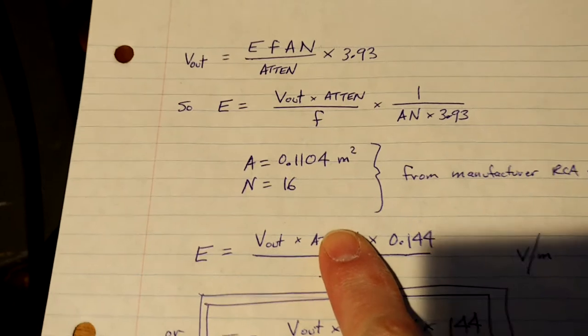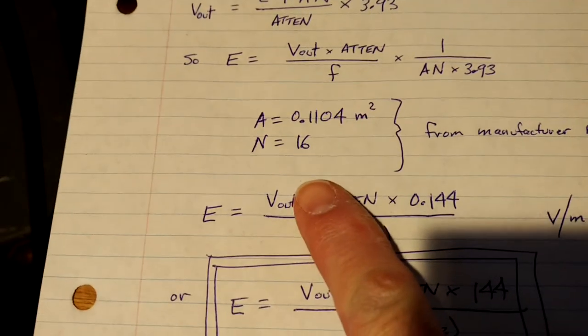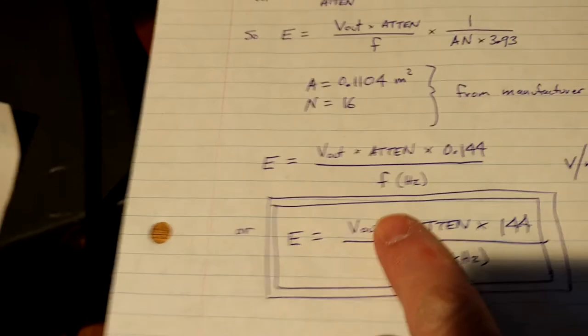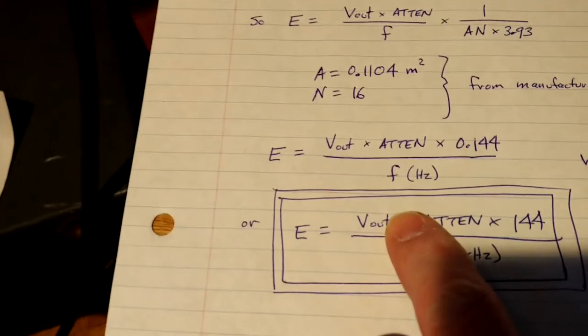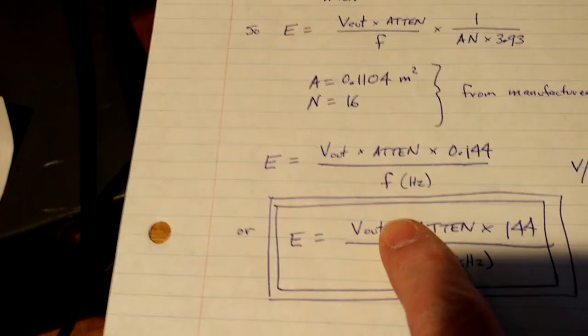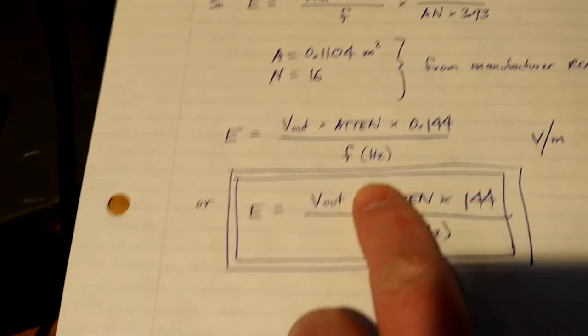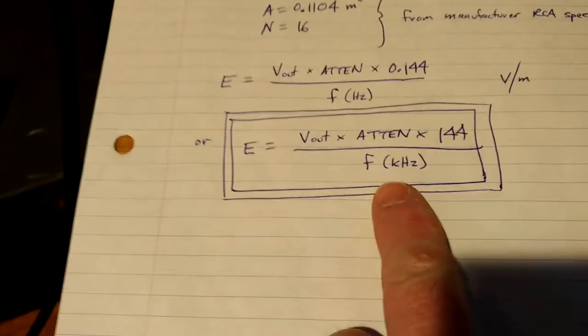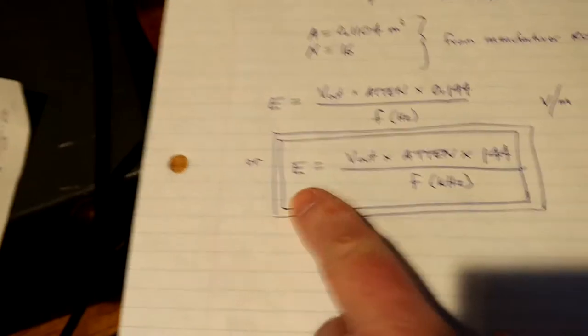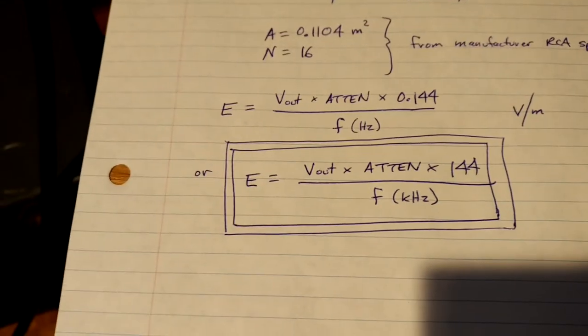So, the area, the enclosed area of the loop is 0.11 meters squared, and there are 16 turns of wire, 8 and 8, because it's balanced. So, that simplifies down to the electric field strength is the reading on the meter, V out, times the attenuation factor, times 0.144 over the frequency in hertz, or if you want to work with microvolts and kilohertz, you just have a factor of 1,000 there.